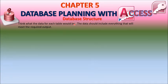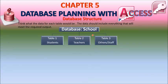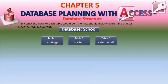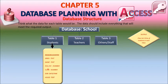Think about what the data for each table would be. The data should include everything that will meet the required output. This is the database structure of the school. In this database, we have created three tables: table one is Students, table two is Teachers, and table three is Other Staff. They are related to each other, and all three tables are related to the main school database. In table one, we have designed the structure with fields: GR number, name, roll number, date of birth, and house. These are the field names and their corresponding data types.